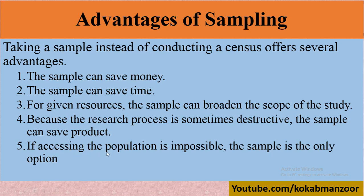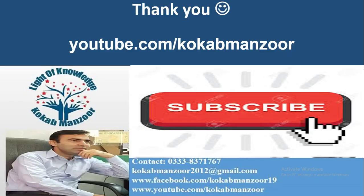If accessing the population is impossible — sometimes it is difficult or impossible to study the entire population — then we take a sample of it. These are the advantages and reasons why we go for sampling.